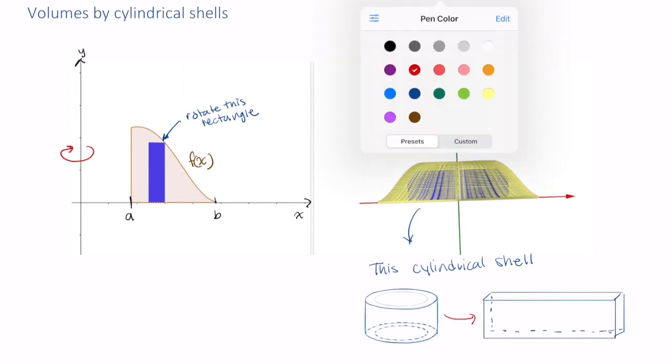We know how to find the volume of this prism. We need three measurements: this measurement, this measurement, and this measurement.